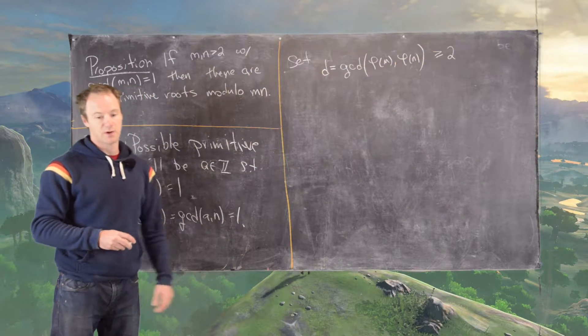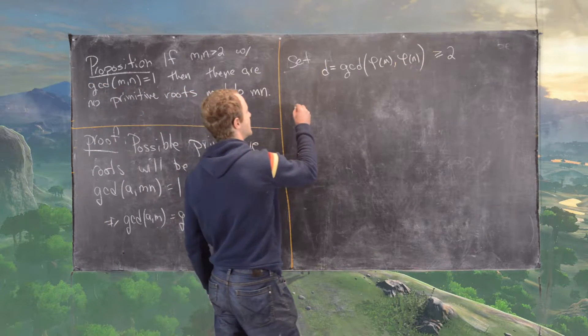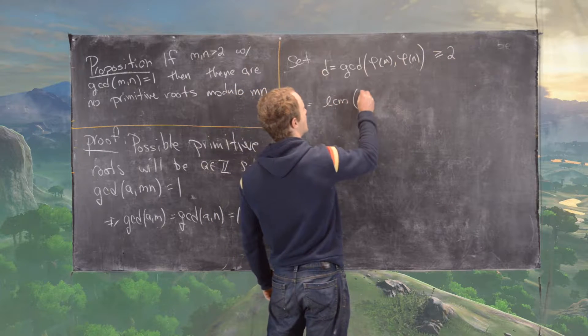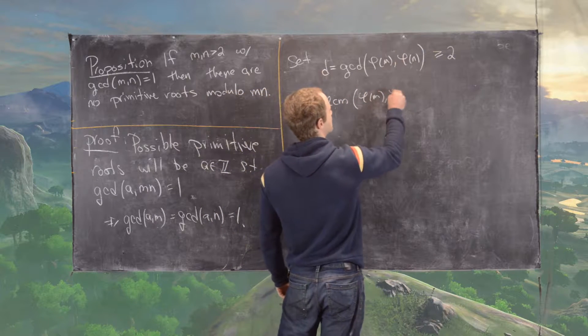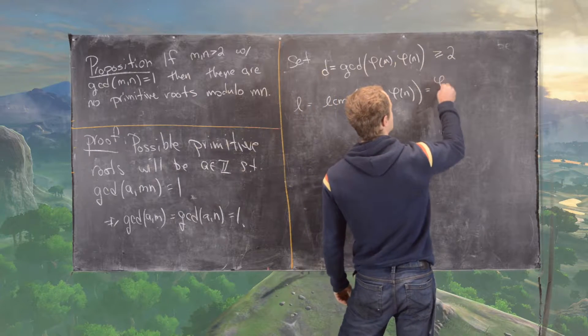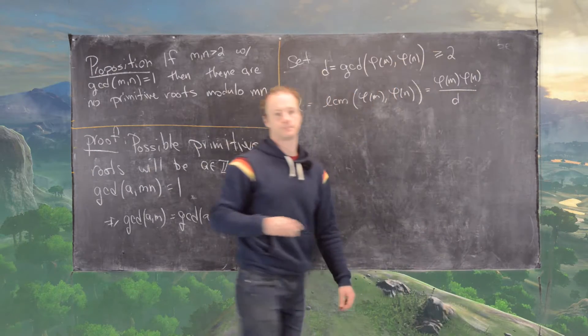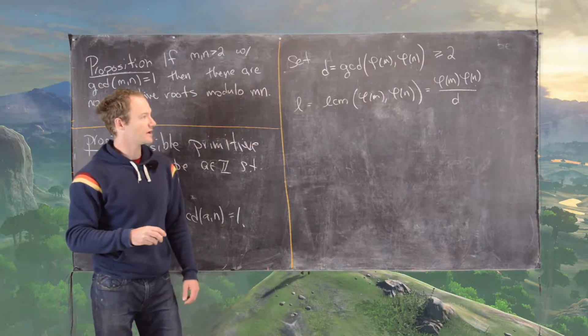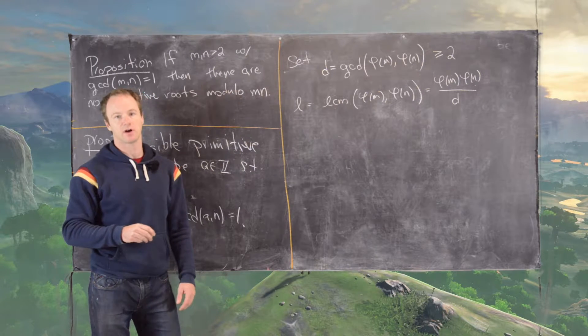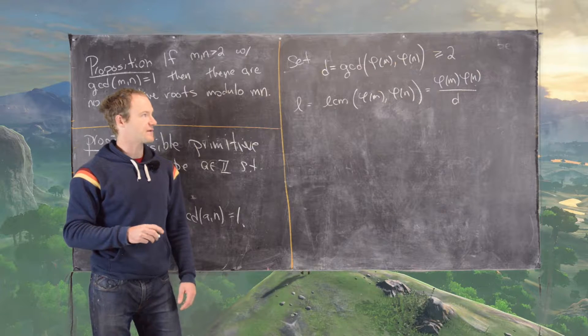Now the next thing we want to do is not only take the GCD but we'll also take the LCM. So let's say we have L which equals the LCM of phi of M times phi of N over D. Just by the general result that the LCM of two numbers is their product divided by their GCD.